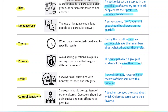Cultural sensitivity means keeping your survey open and being sensitive to other cultures, being as inclusive as possible. For example, if a teacher surveyed their class about which Christmas carols were their favorite, that's not culturally sensitive because many students might not celebrate Christmas. Those are the six influencing factors. Now we're going to look at some questions, see which influencing factors are affecting them, and how we can improve them.